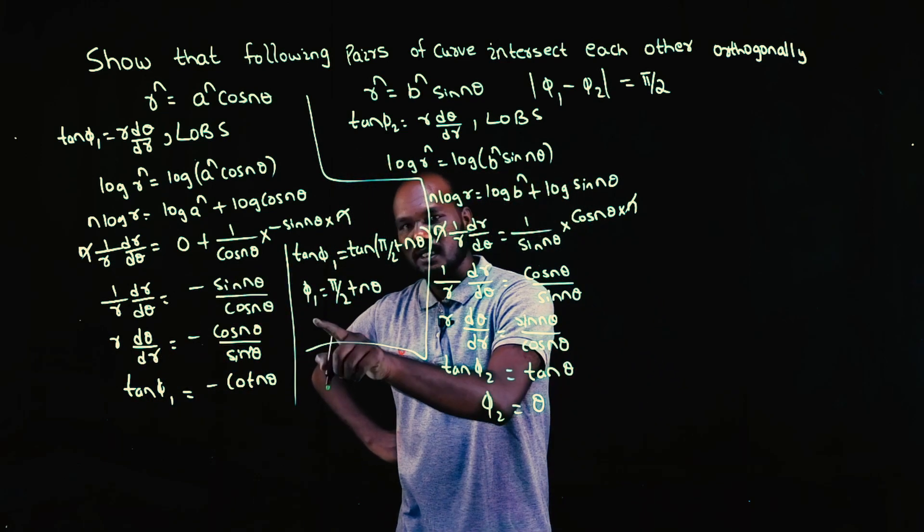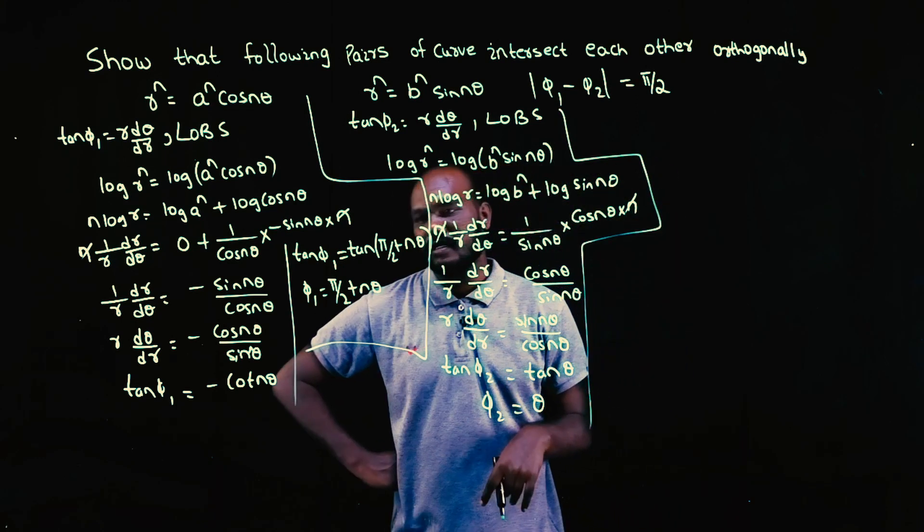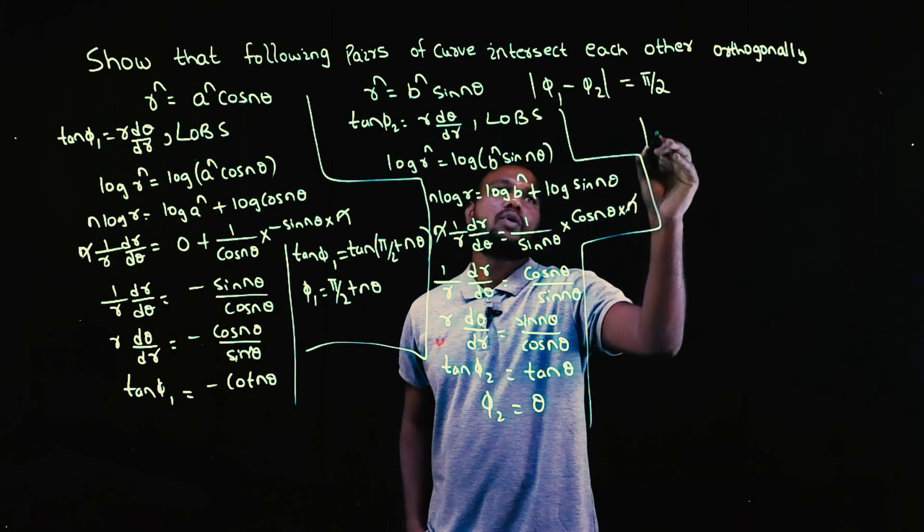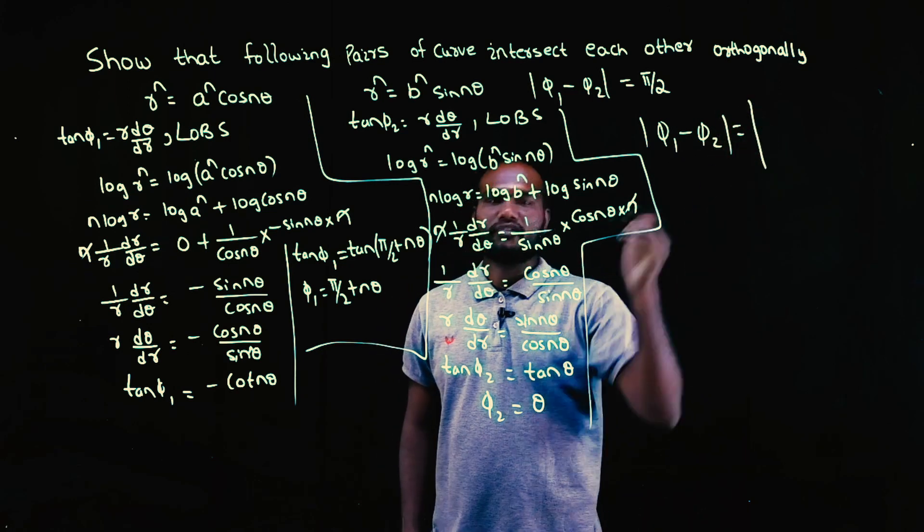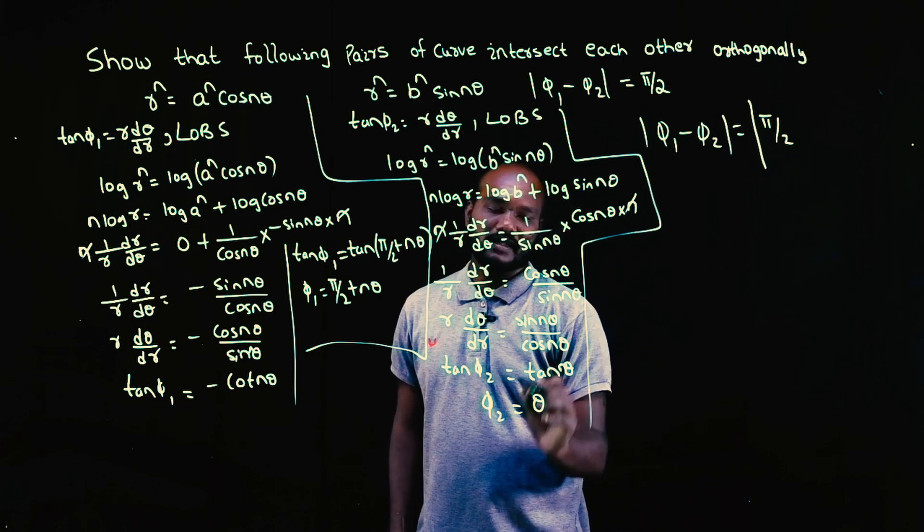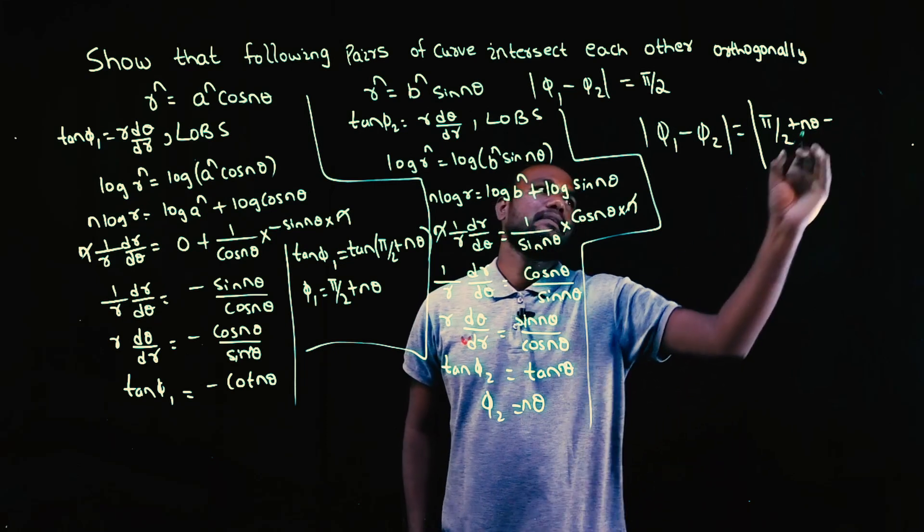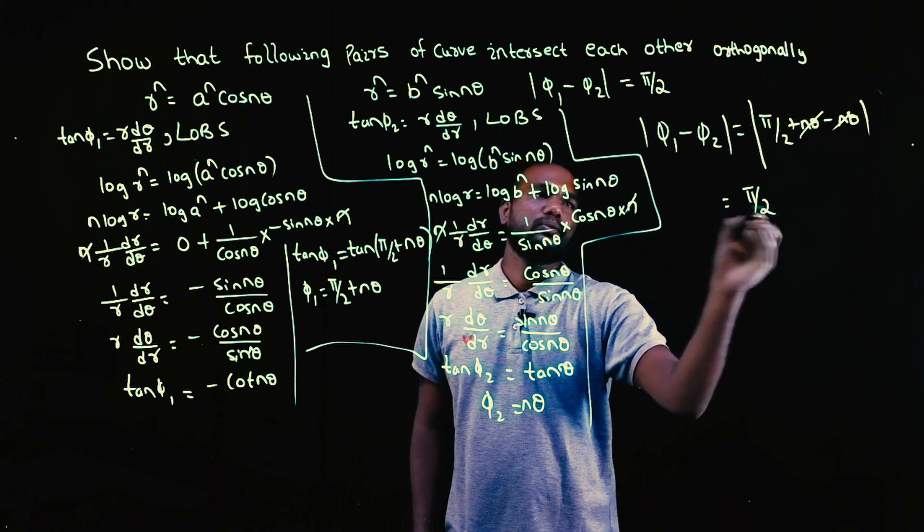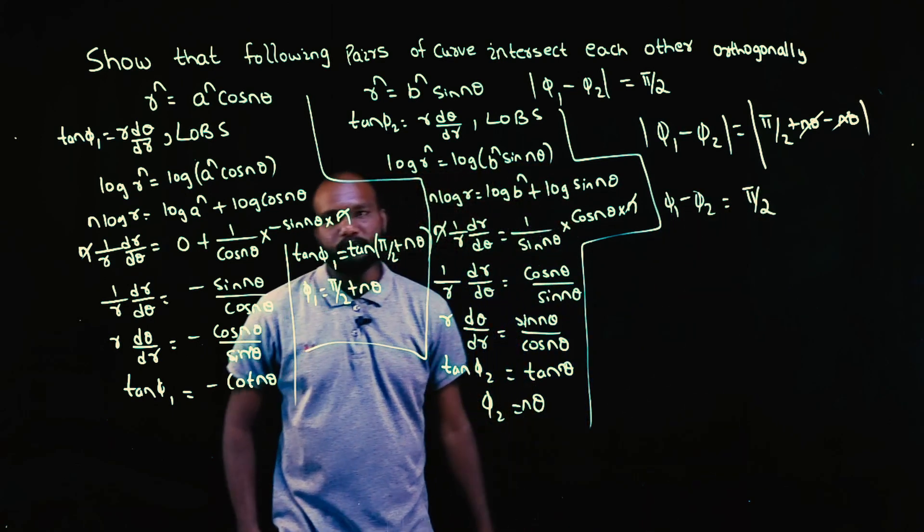Now we have phi 1 and phi 2, but I am interested in modulus of phi 1 minus phi 2. Phi 1 is phi by 2 plus n theta minus phi 2 which is n theta. N theta and n theta get cancelled, so I will get phi by 2. So phi 1 minus phi 2 is phi by 2. Answer is phi by 2, we get orthogonally intersecting curves.